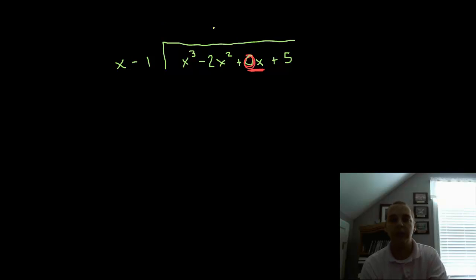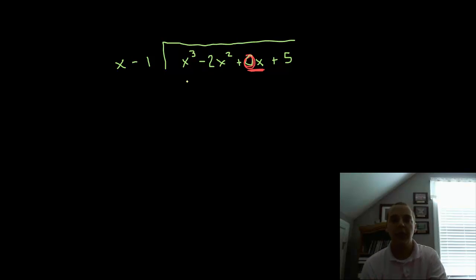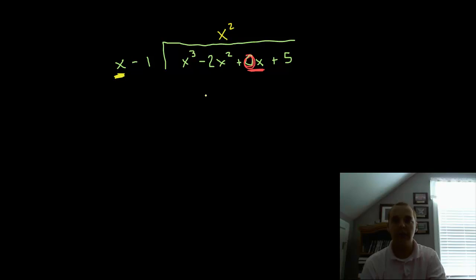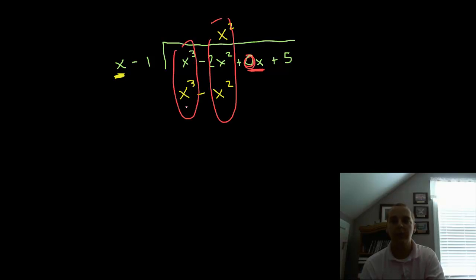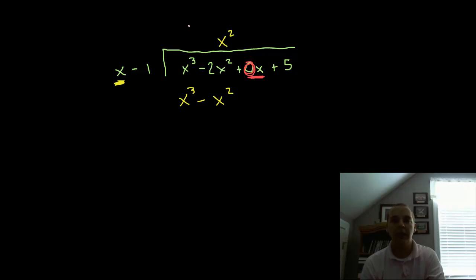Now we play the same game as in middle school. Ask yourself: what times this polynomial gets me as close to the first few terms as possible? Focus on the leading term — what times x gives me x cubed? Obviously x squared. So we put x squared up top. Then, just like with numbers, we take x squared times both terms of the divisor and write the product down: x squared times x is x cubed, and x squared times negative 1 is minus x squared. Write this carefully and put each term in its appropriate column.